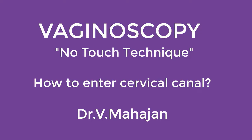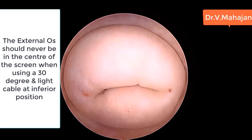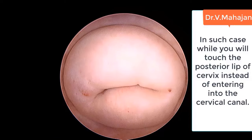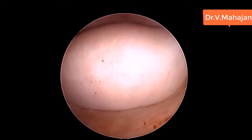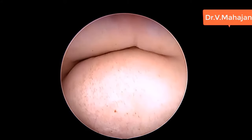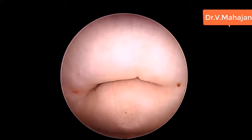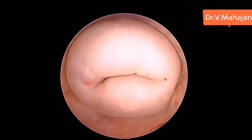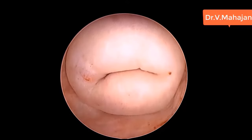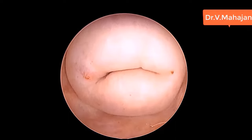How to enter the cervical canal in a vaginoscopy technique: when you distend the vagina with the fluid medium and approximate the labia, if you are keeping the external os in the center as shown in this video and you try to enter the cervical canal, invariably you hit the posterior lip.